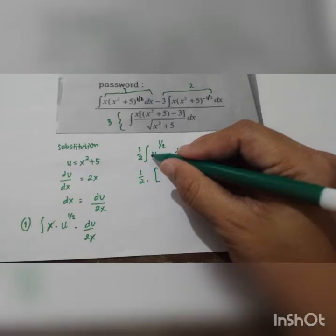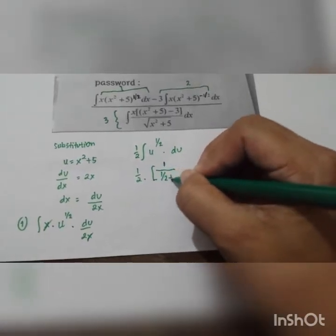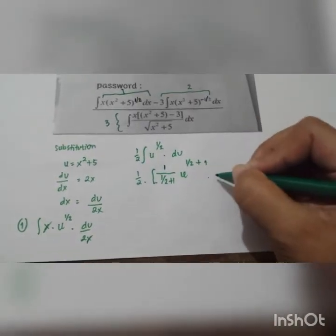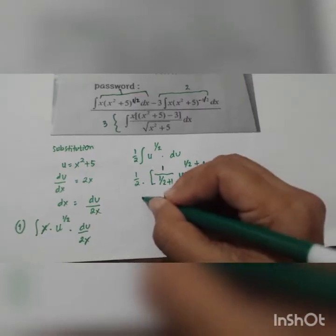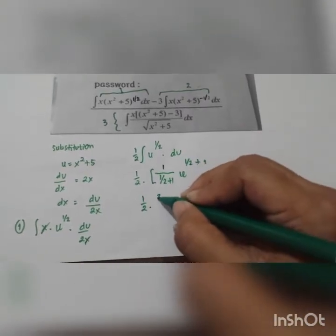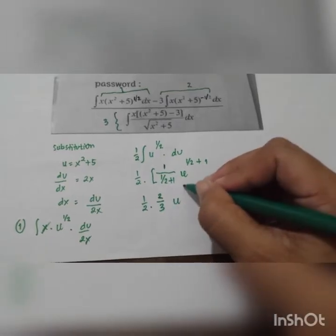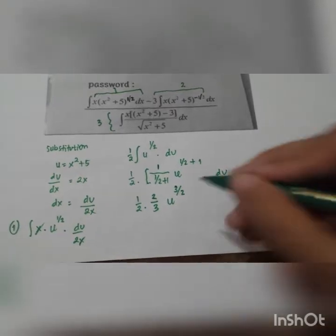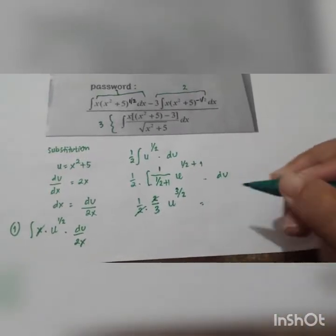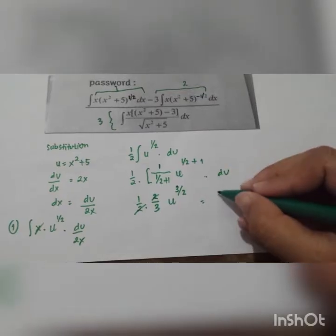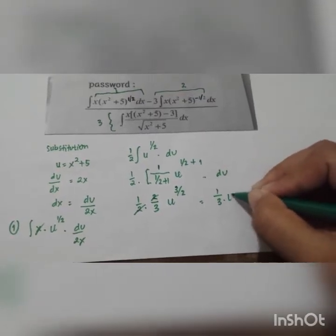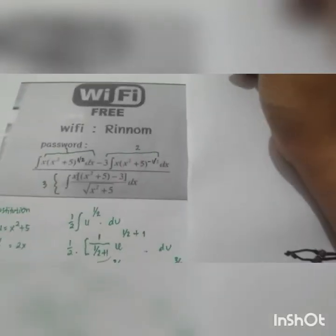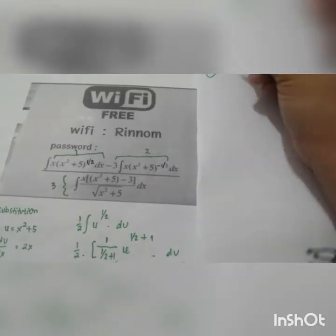So we have one-half times the integral of u to the power of one-half du. Applying the power rule, the coefficient is 1 over (one-half + 1), giving u to the power of 3/2. So Step 1 gives us one-third times u to the power of 3/2.